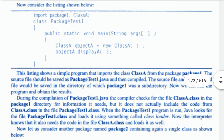Now consider the listing shown below. This listing shows a simple program that imports Class A from the package package one. The source file should be saved as PackageTest1.java and then compiled. The source file and compiled file should be saved in the directory of which package one is a subdirectory. Now we can run the program and obtain the results.